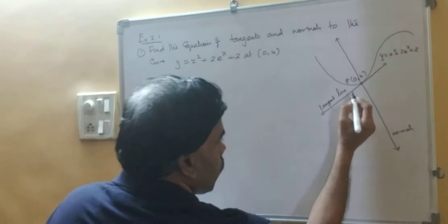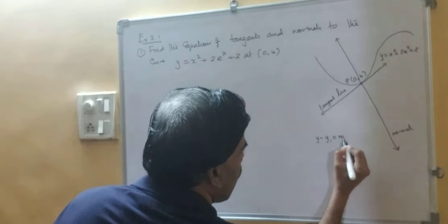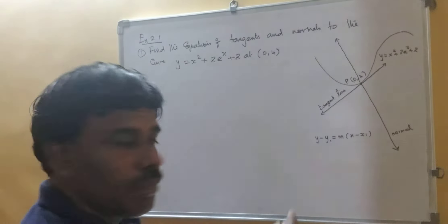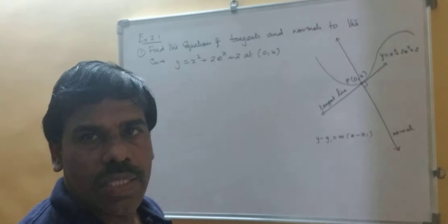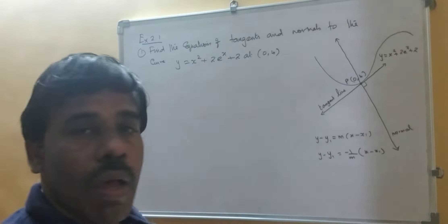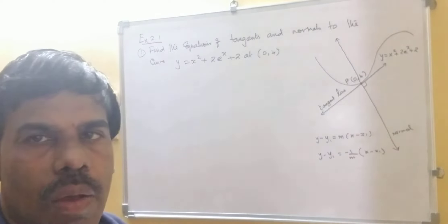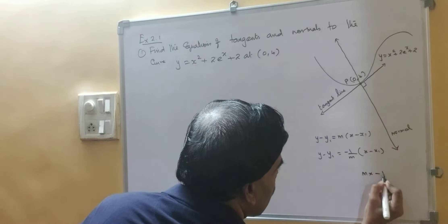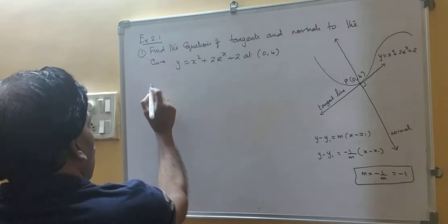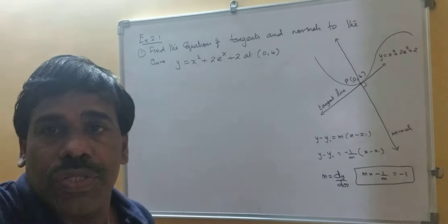Now you know the formula to find the tangent. Equation of the tangent to the curve is y minus y1 equal to m into x minus x1. The normal is perpendicular to the tangent, so for the normal: y minus y1 equal to minus 1 upon m into x minus x1, because the slopes of the tangent and normal multiply to give minus 1. Here m is the slope, which means derivative dy by dx.